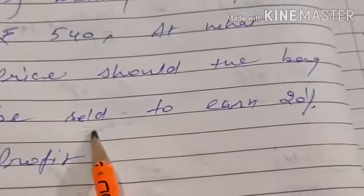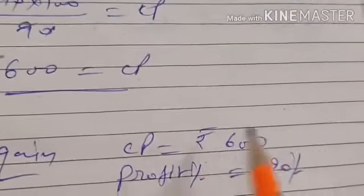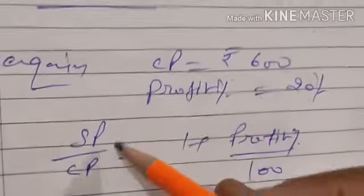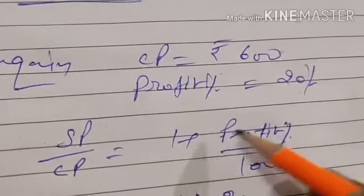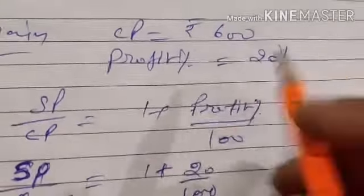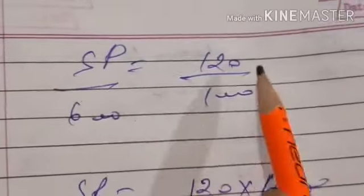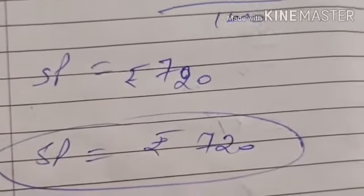Now CP is 600 rupees. Read the second part: at what price should the bag be sold to earn 20% profit? We have CP 600 and profit percentage 20. We use SP upon CP equals 1 plus profit percent upon 100. Putting values: SP upon 600 equals 1 plus 20 upon 100 equals 120 upon 100. So SP equals 720 rupees. In this way you can solve the problem.